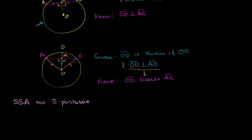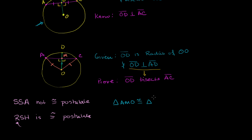But we did establish in that video that RSH is a congruency postulate. RSH tells us that if we have a right triangle, and one of the legs is congruent and the hypotenuse is congruent, then the two triangles are congruent. Here, AMO and CMO are both right triangles, they share leg MO, and their hypotenuses are equal. So by RSH, triangle AMO is congruent to triangle CMO.